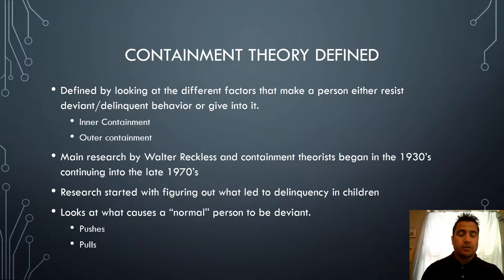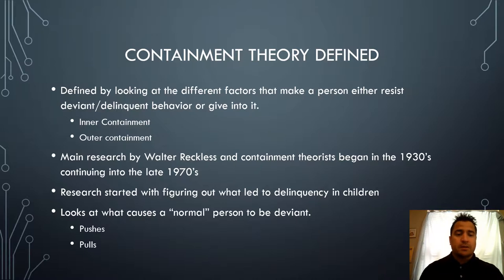Containment theory is defined by looking at the different factors that make a person either resist deviant or delinquent behavior or give in to it. The two main concepts are inner containment and outer containment. Main research was done by Walter Reckless and other containment theorists, beginning in the 1930s and continuing until the late 70s, before evolving into control theory.